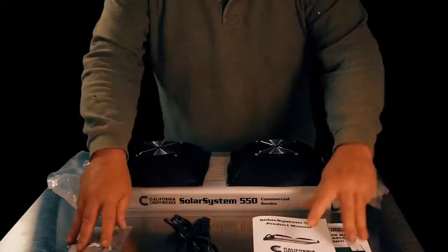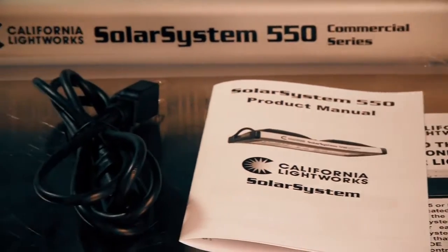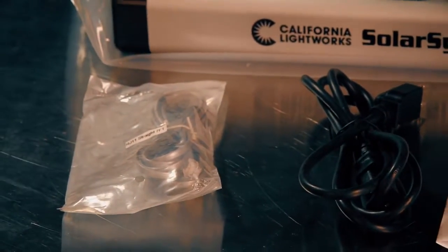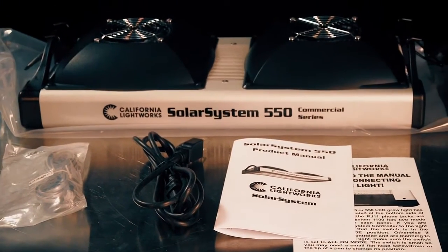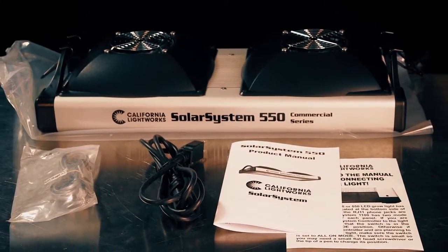There's some heavy duty hangers for the light, instruction manual, power cord, and then some telephone type cord for connecting it to controllers. So that's what comes in the box with the light system.